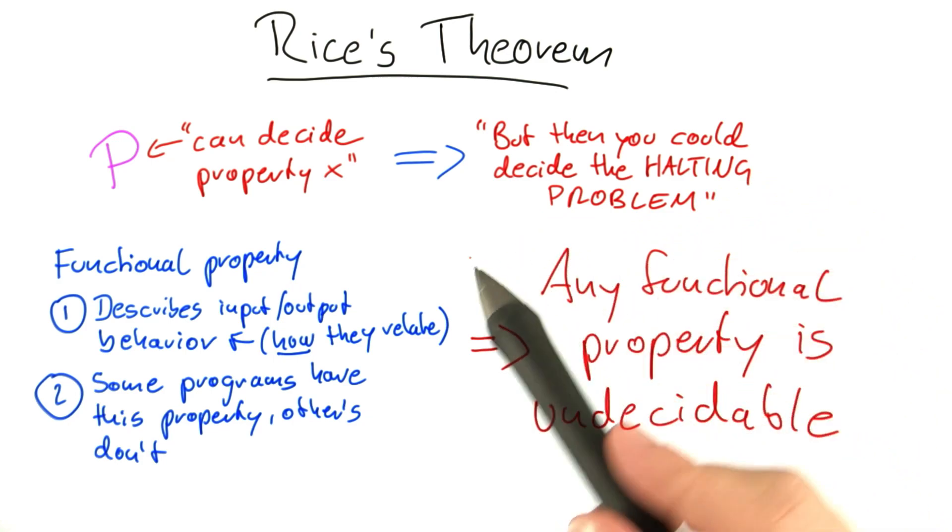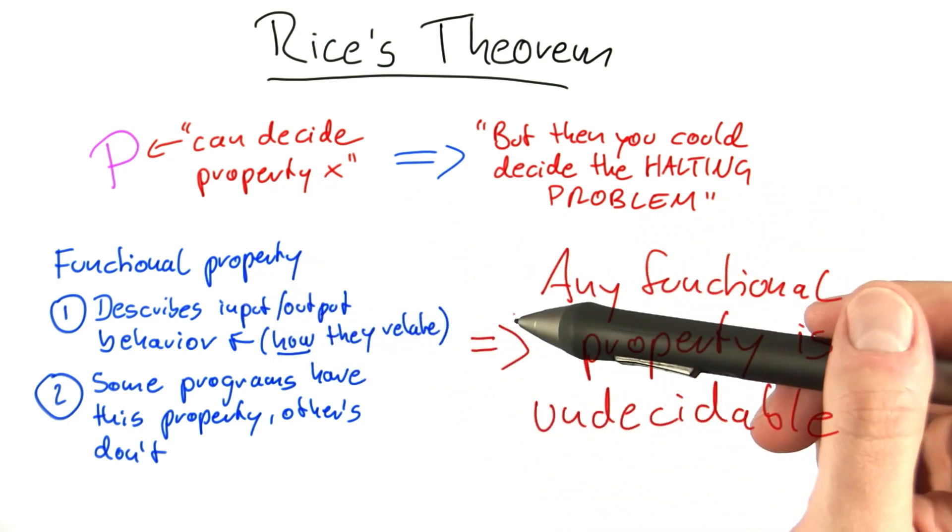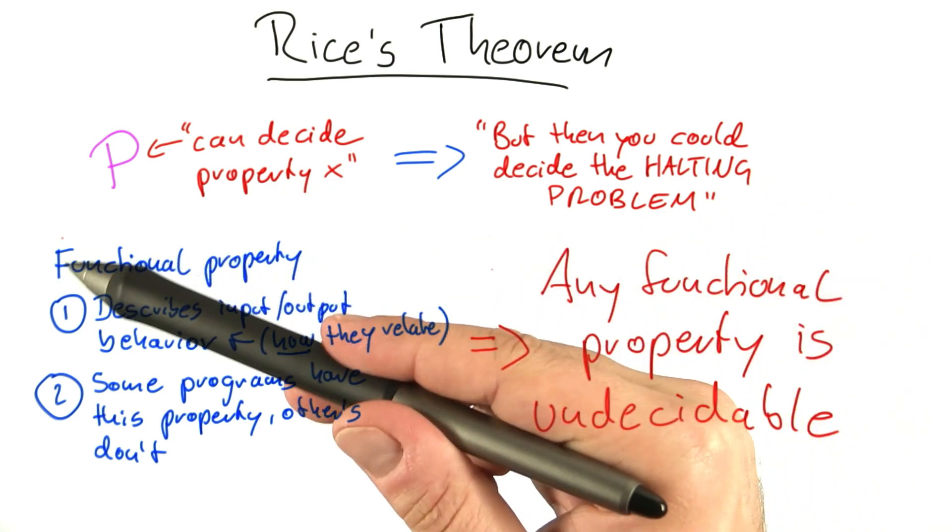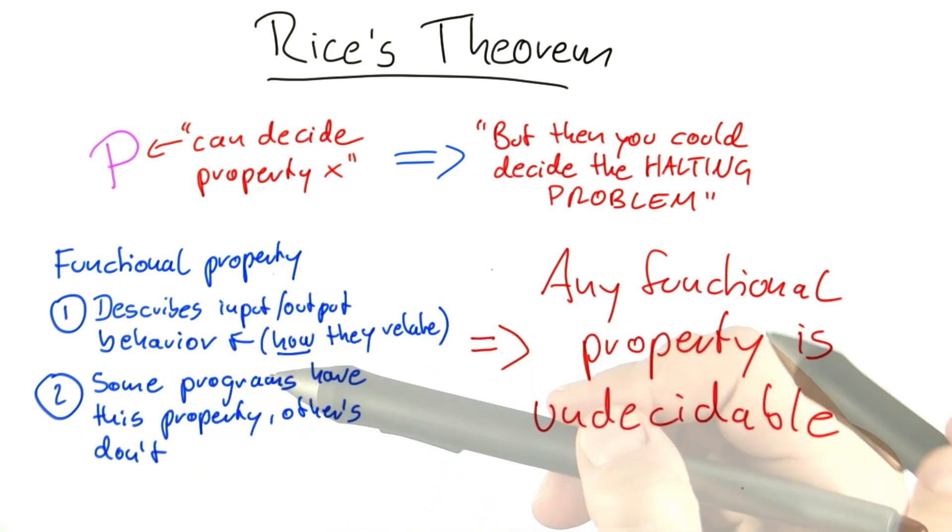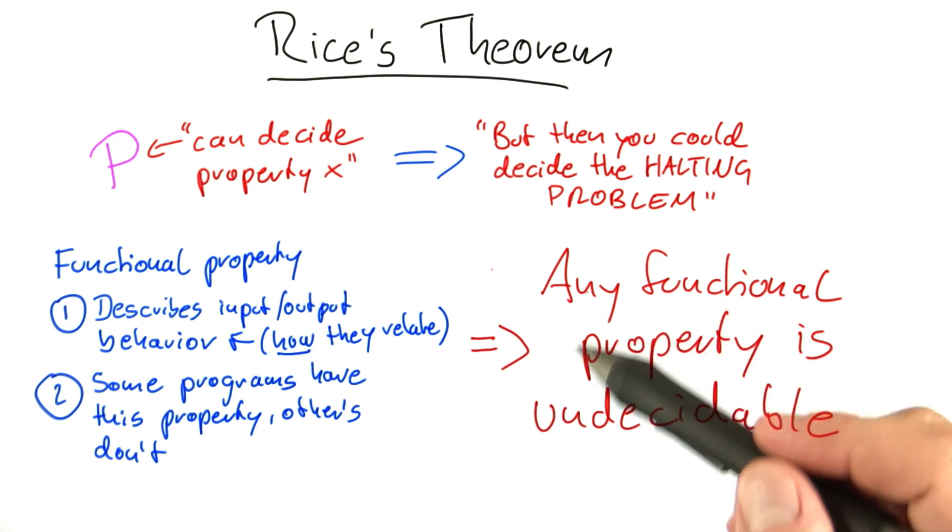Rice's theorem simply says that if you ask for an algorithm to decide if a program has a functional property, and it can be any functional property, then you're looking at an undecidable problem.